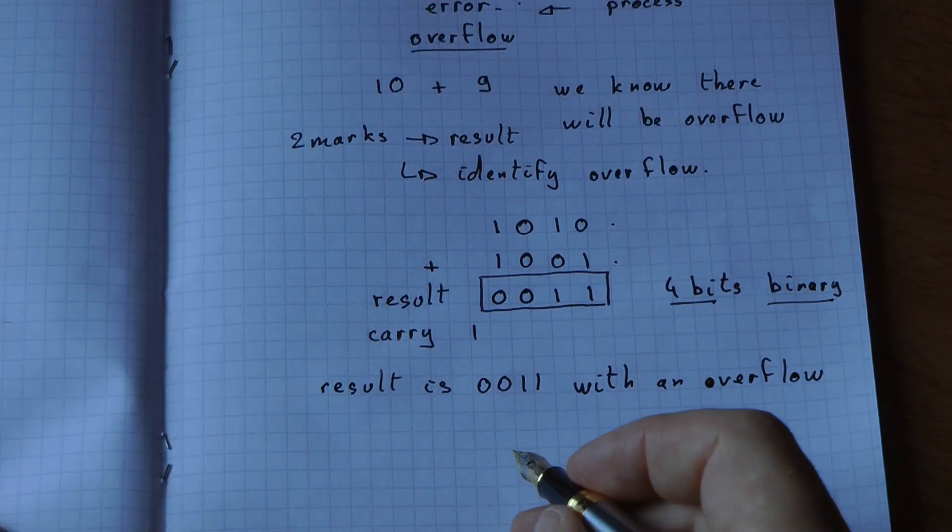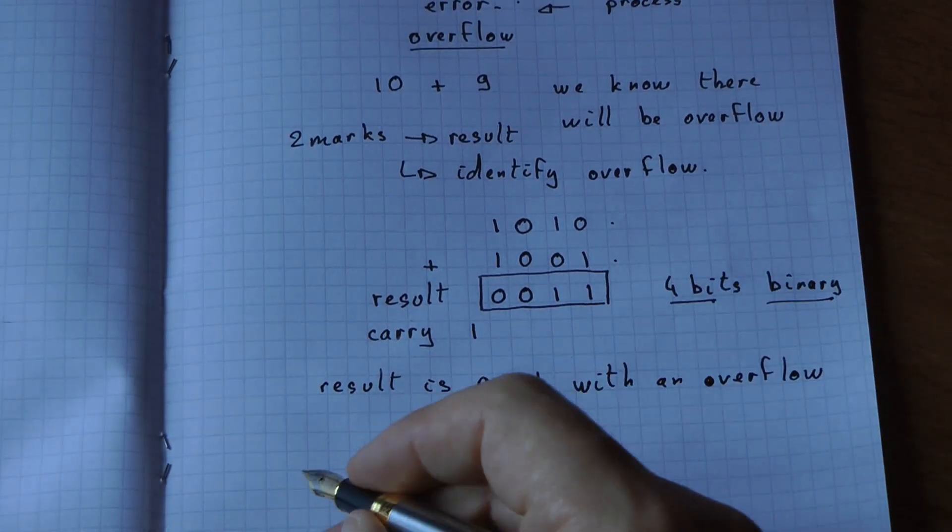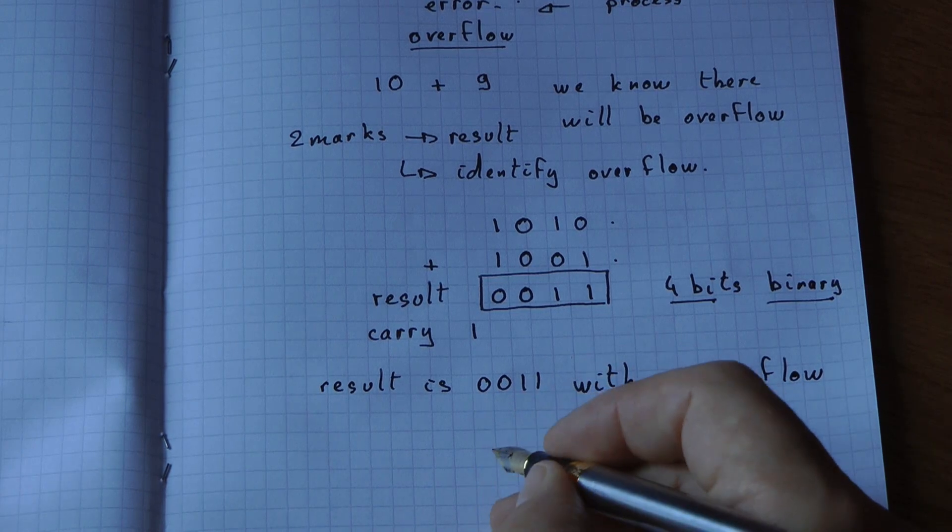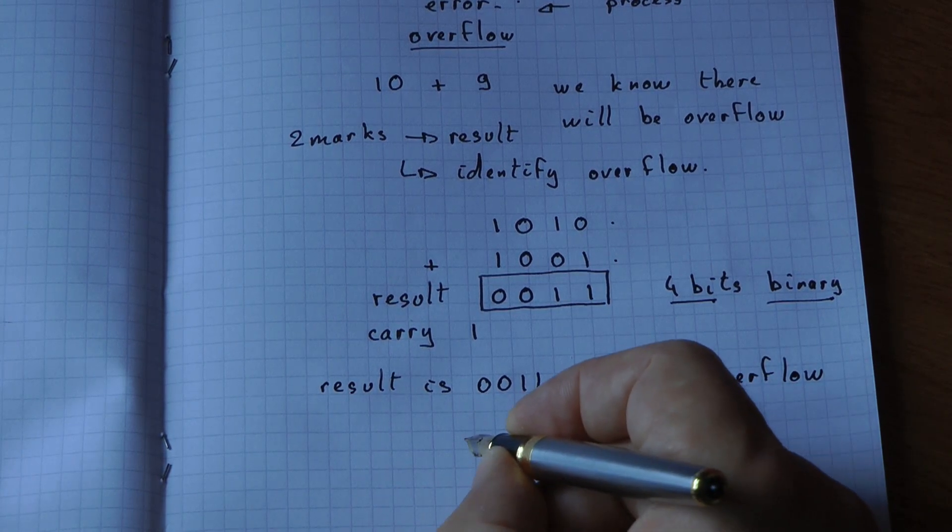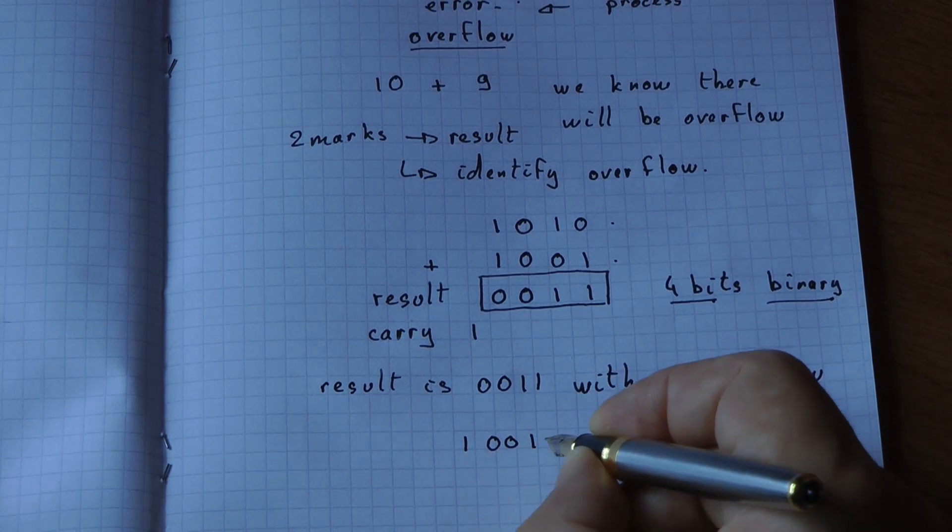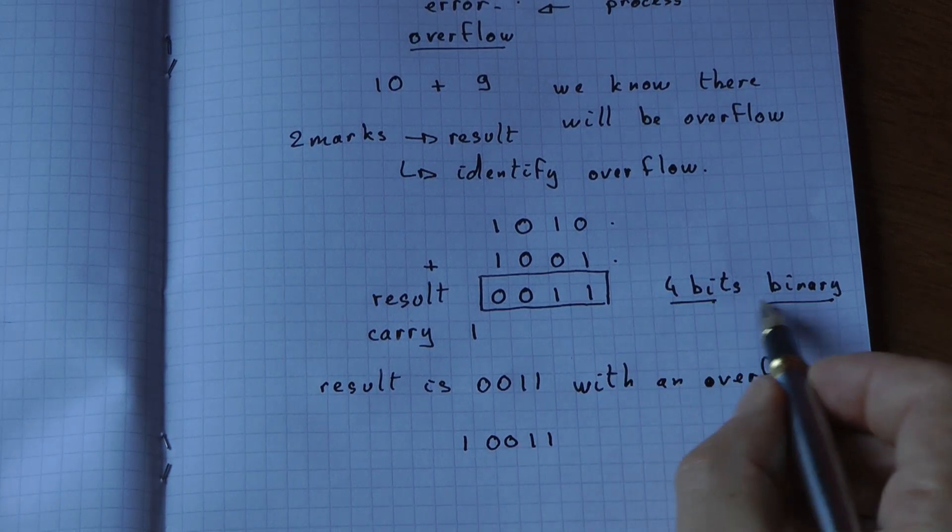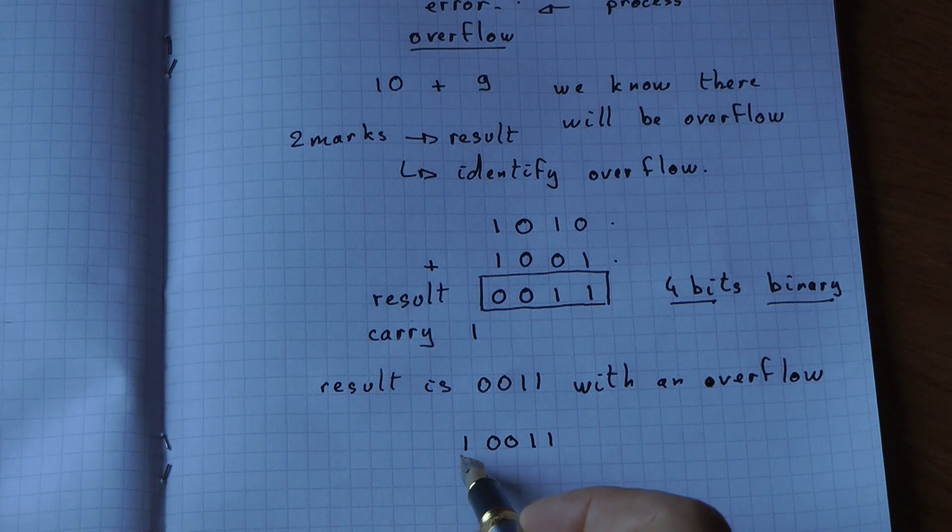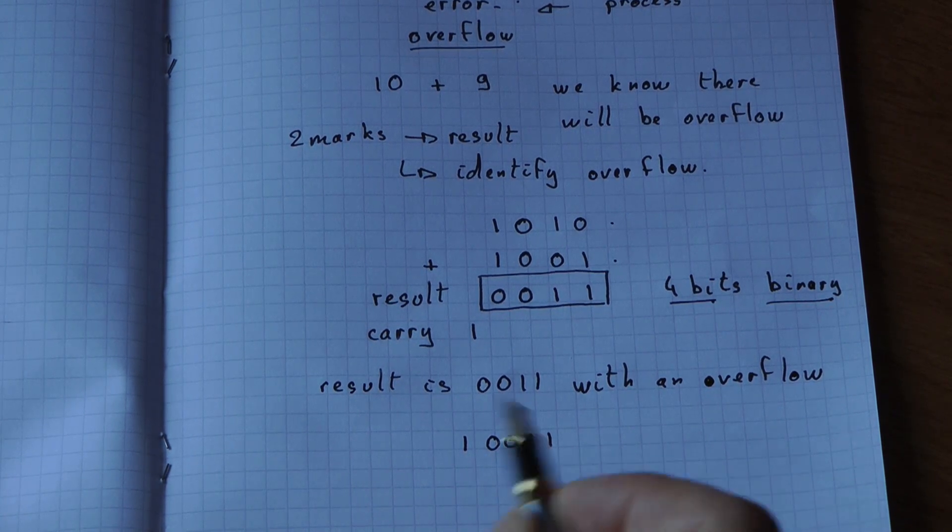Another way to write this, which will be accepted in the exam, is to write your result as 10011. But this is no longer 4-bit binary because now you have 1, 2, 3, 4, 5 bits.